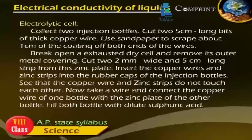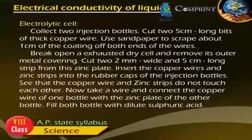Electrolytic cell. Collect two injection bottles. Cut two 5 cm long pieces of thick copper wire. Use sandpaper to scrape about 1 cm of coating off both ends of the wire. Break open an exhausted dry cell and remove its outer metal covering. Cut two 2 mm wide and 5 cm long strips from the zinc plate. Insert the copper wire and zinc strips into the rubber cap of the injection bottle, making sure they do not touch each other. Now take a wire and connect the copper wire of one bottle with the zinc plate of another bottle. Fill both bottles with diluted sulphuric acid.